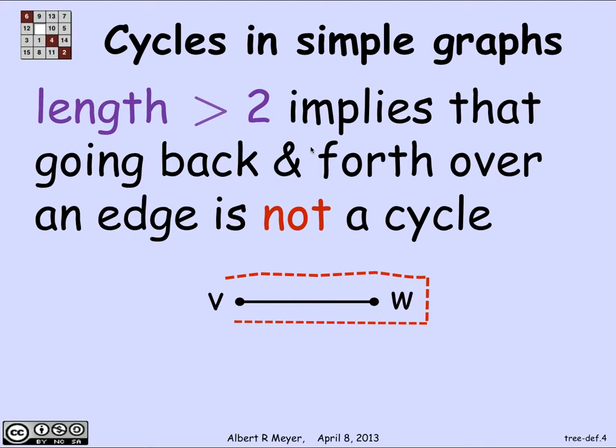It also rules out the cycle of length zero, which you get by taking a vertex all by itself. With that technical definition we now know what a cycle is in a simple graph and we understand the definition of tree.